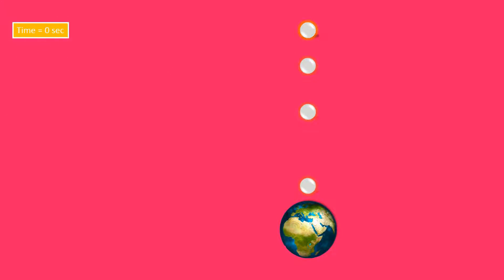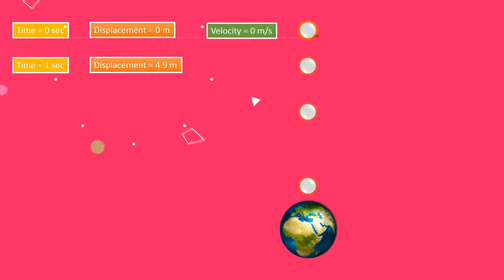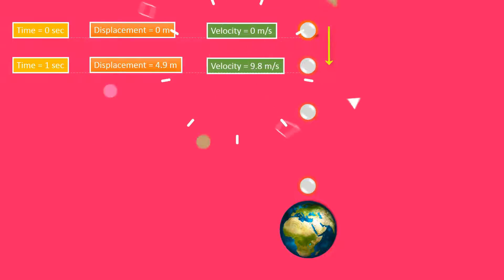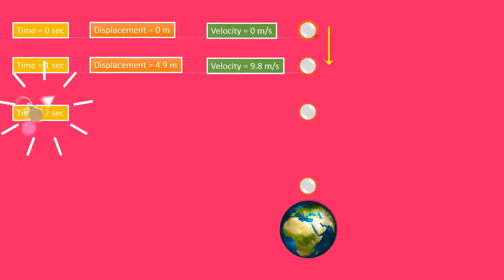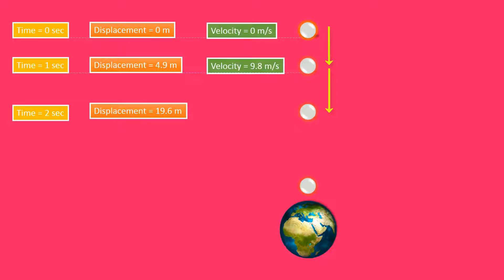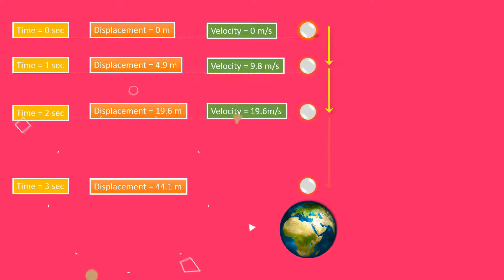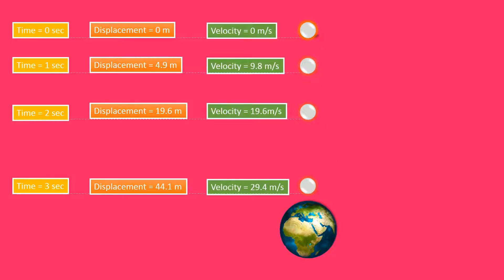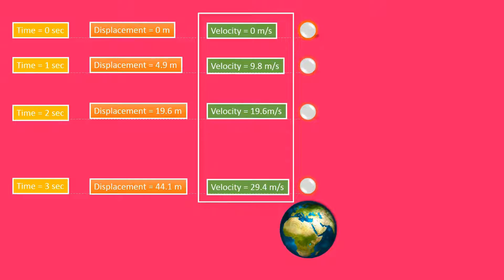Now let's consider that a body falls towards earth. If I trace its motion path, at time 0 seconds the displacement is 0 and velocity is 0. At time 1 second, displacement becomes 4.9 meters and velocity is 9.8 m/s. At time 2 seconds, displacement becomes 19.6 meters and velocity is 19.6 m/s. At time 3 seconds, displacement is 44.1 meters and velocity becomes 29.4 m/s.